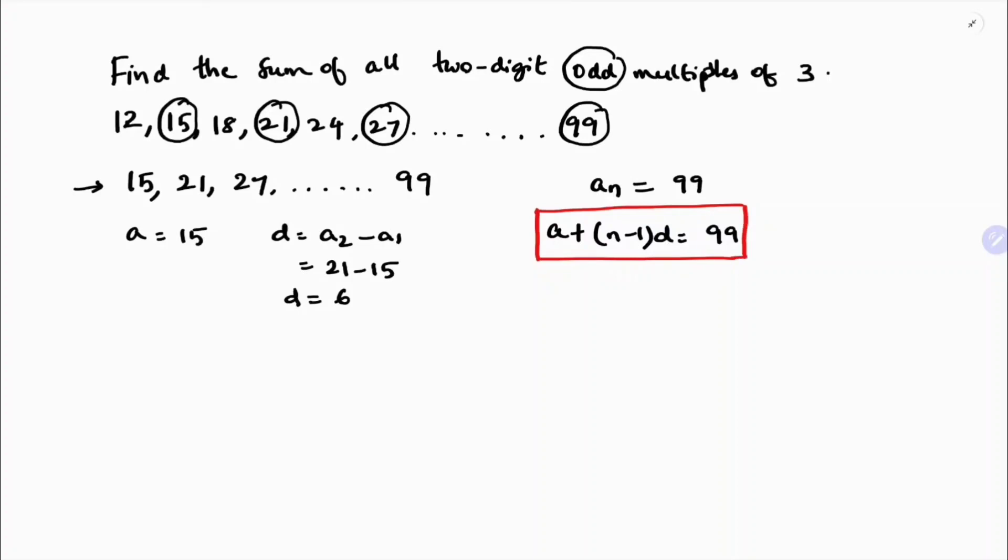Here a is 15, plus (n-1) times 6 equals 99. So 15 plus 6n minus 6 equals 99. 6n plus 9 equals 99. 6n equals 99 minus 9.